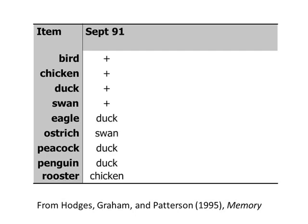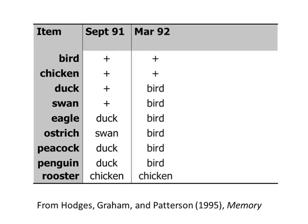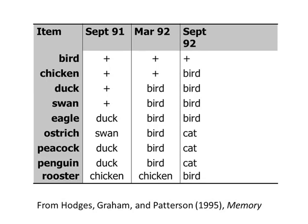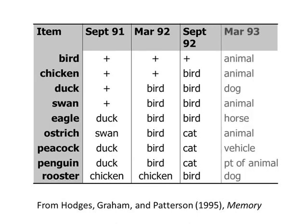This table shows the responses he gave to various kinds of birds. In his first session, the patient correctly named the bird, chicken, duck, and swan, but produced incorrect names for the eagle, ostrich, peacock, penguin, and rooster, calling these items either a duck, a swan, or a chicken. Six months later, he was unable to get any specific bird name out, with the sole exception of the word chicken — all other items were called bird. Six months later, no specific bird name was produced, and for the ostrich, peacock, and penguin, the incorrect response cat was generated. Six months after that, the word bird was not produced for any item; instead, the patient called several birds animal, produced the incorrect response dog and horse for some items, and very occasionally made very unusual responses, such as calling the peacock a vehicle.